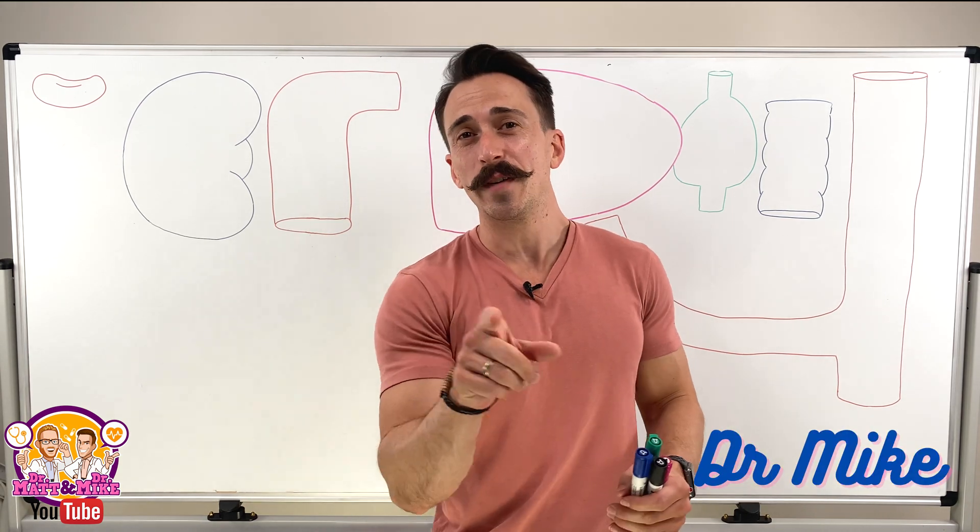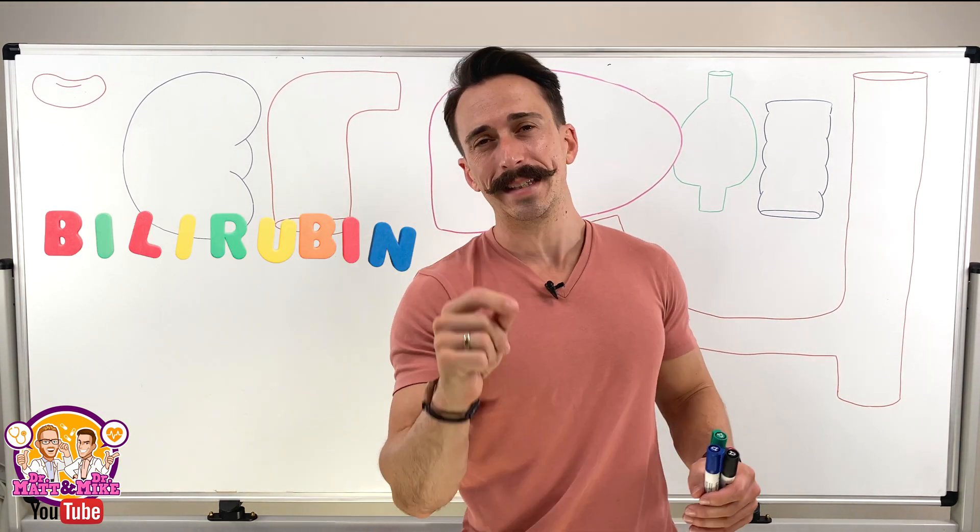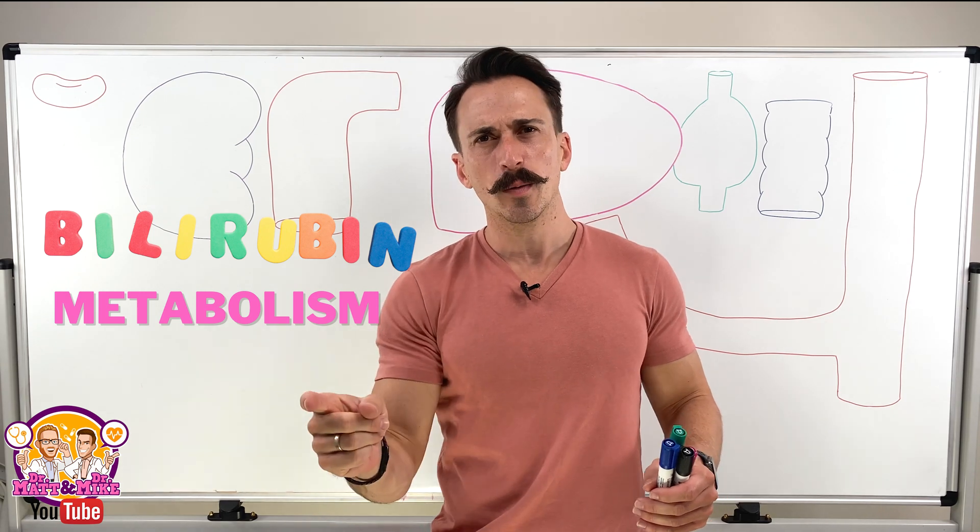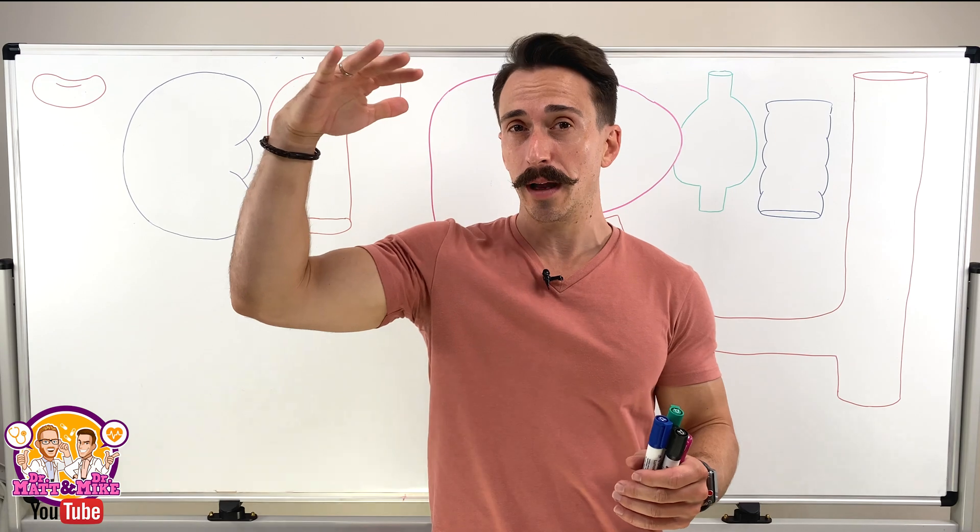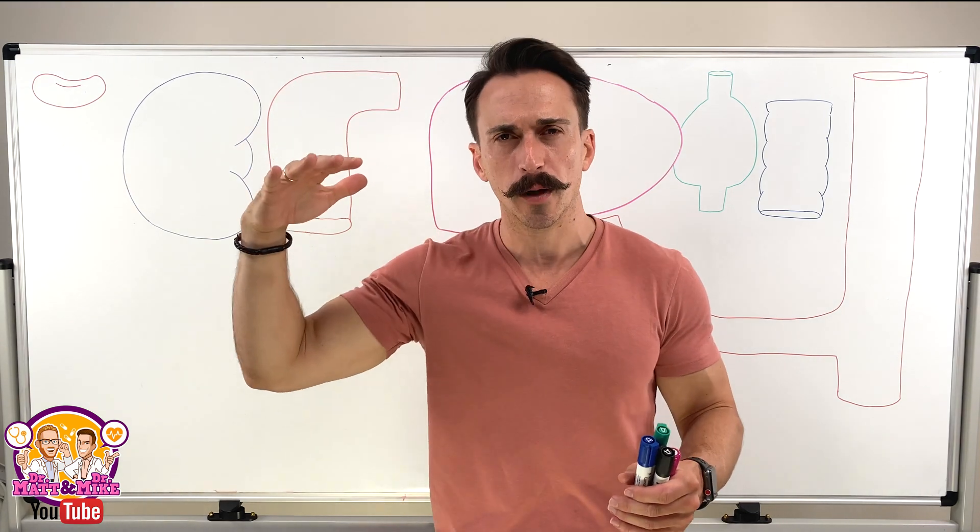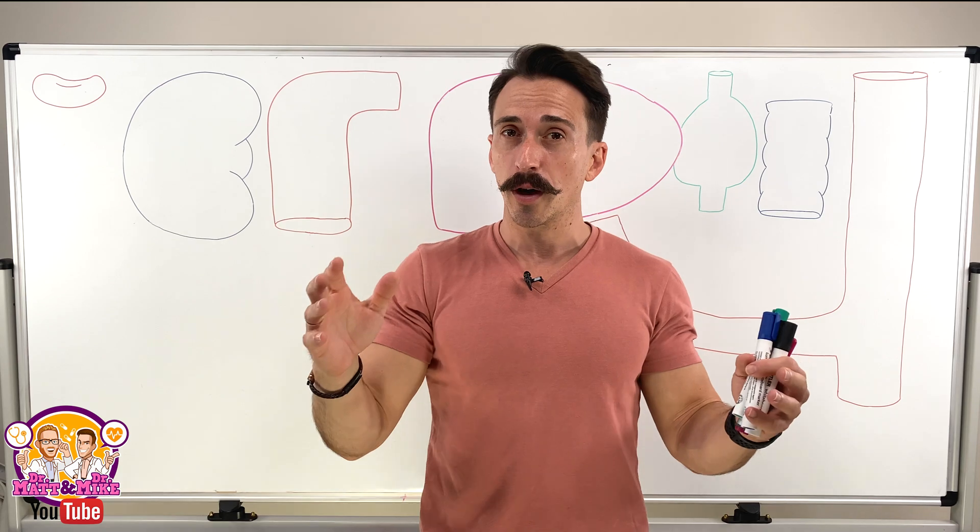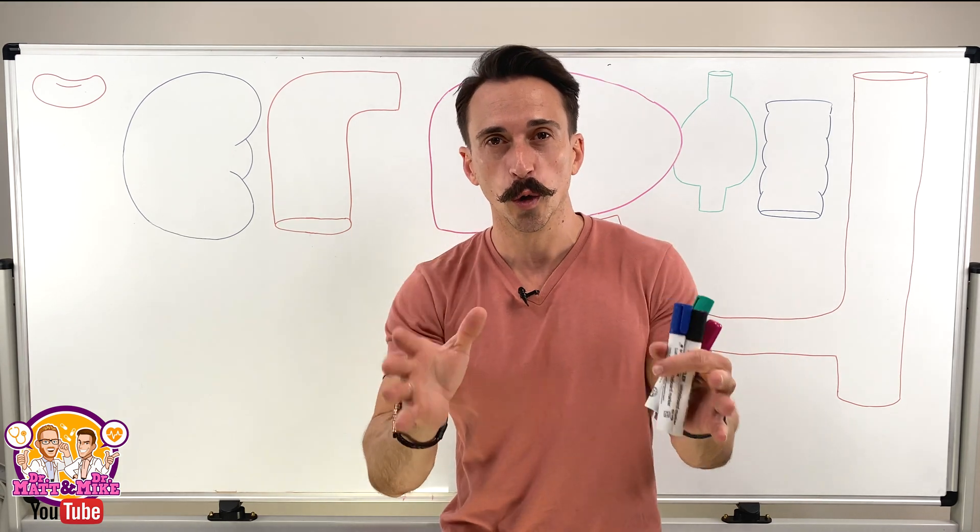Hi everybody, Dr. Mike here. In this video we're going to take a look at bilirubin metabolism and see what happens when bilirubin begins to accumulate too high in the blood, resulting in a yellow discoloration of our skin, conjunctiva, and mucous membranes that we call jaundice.